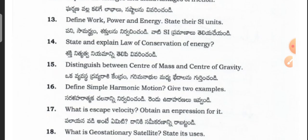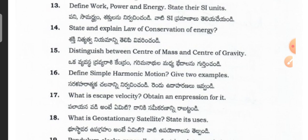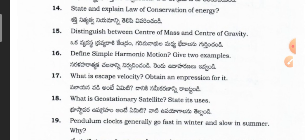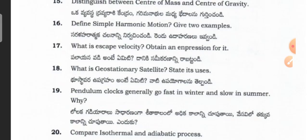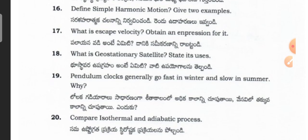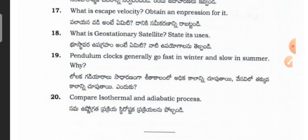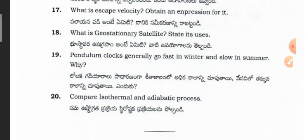State and express the expression of energy. Distinguish between center of mass and center of gravity. What is escape velocity? Obtain an expression for it. What is a geostationary satellite? State its uses. Pendulum clocks generally go fast in winter and slow in summer.